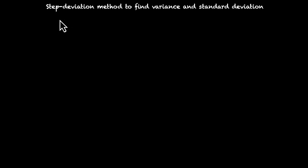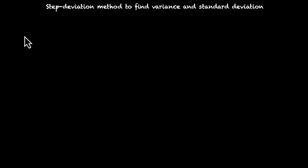In this video, we talk about the step deviation method to find variance and standard deviation. This method works with the assumed mean. So suppose you have classes and their respective frequencies.